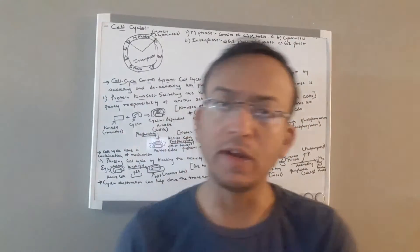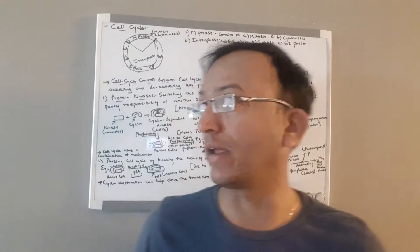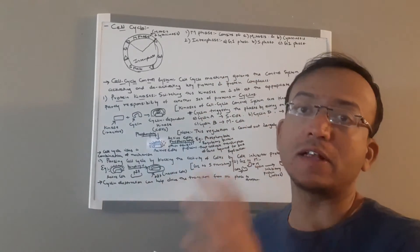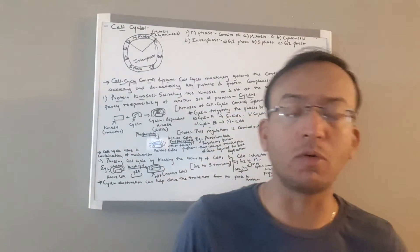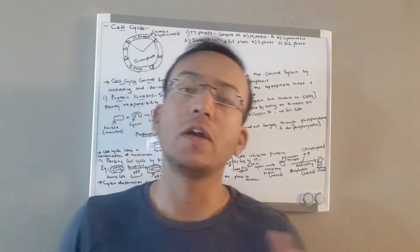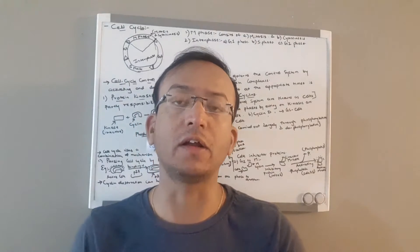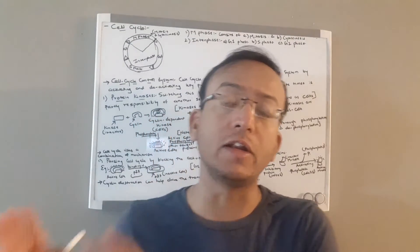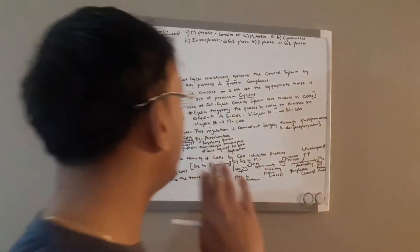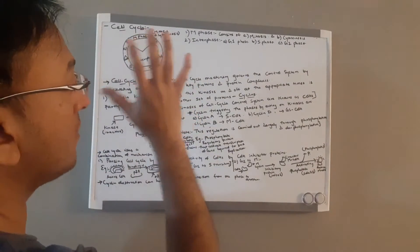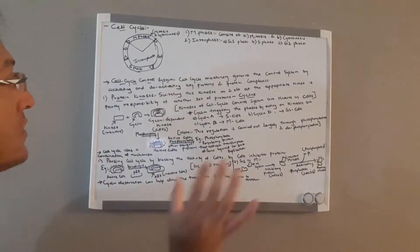Hello guys, welcome to my channel. As you know, we studied around five or six parts of the cell cycle, containing the cell cycle and the cell cycle control system, mitosis, and everything. That's a very long process, which is why it took so many different parts. I'm making a summary of the entire cell cycle in about 15 minutes, covering all the important things.